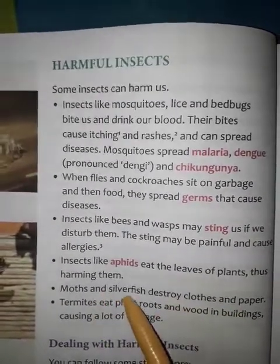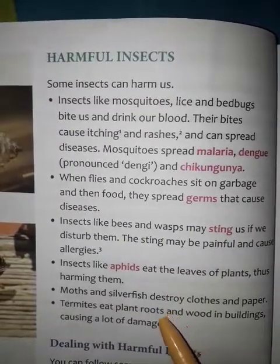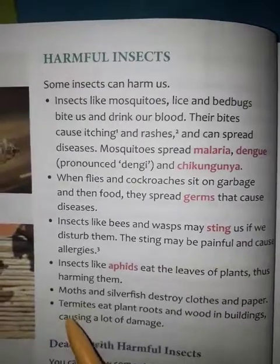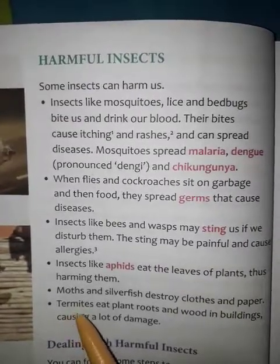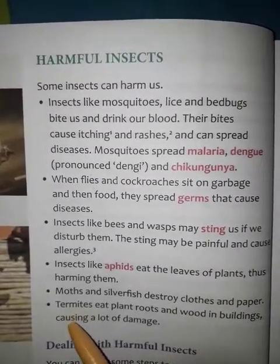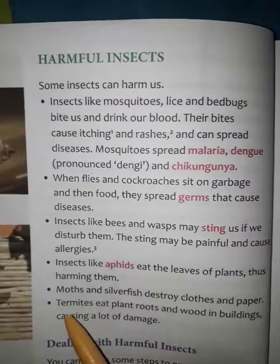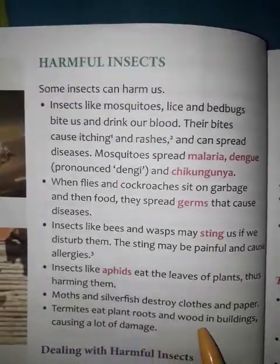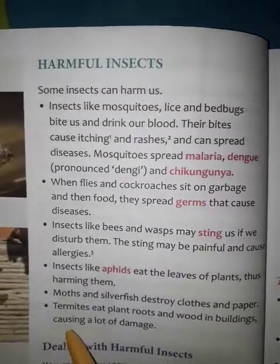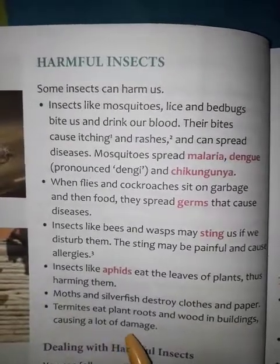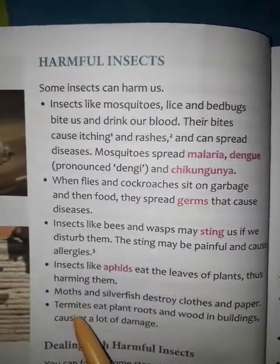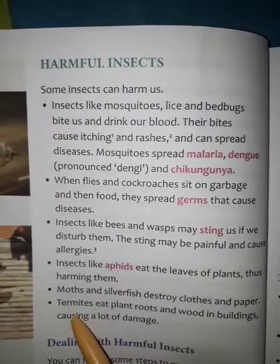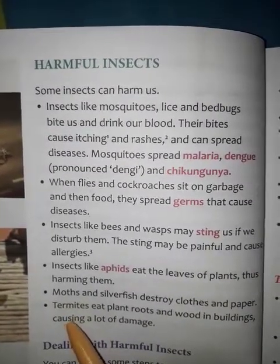Thus they are harmful and create a lot of trouble for us. Next, a very important one is the termites. Termites are a type of bug. They eat plant roots and the wood in buildings, causing a lot of damage. Termites mainly eat wood.